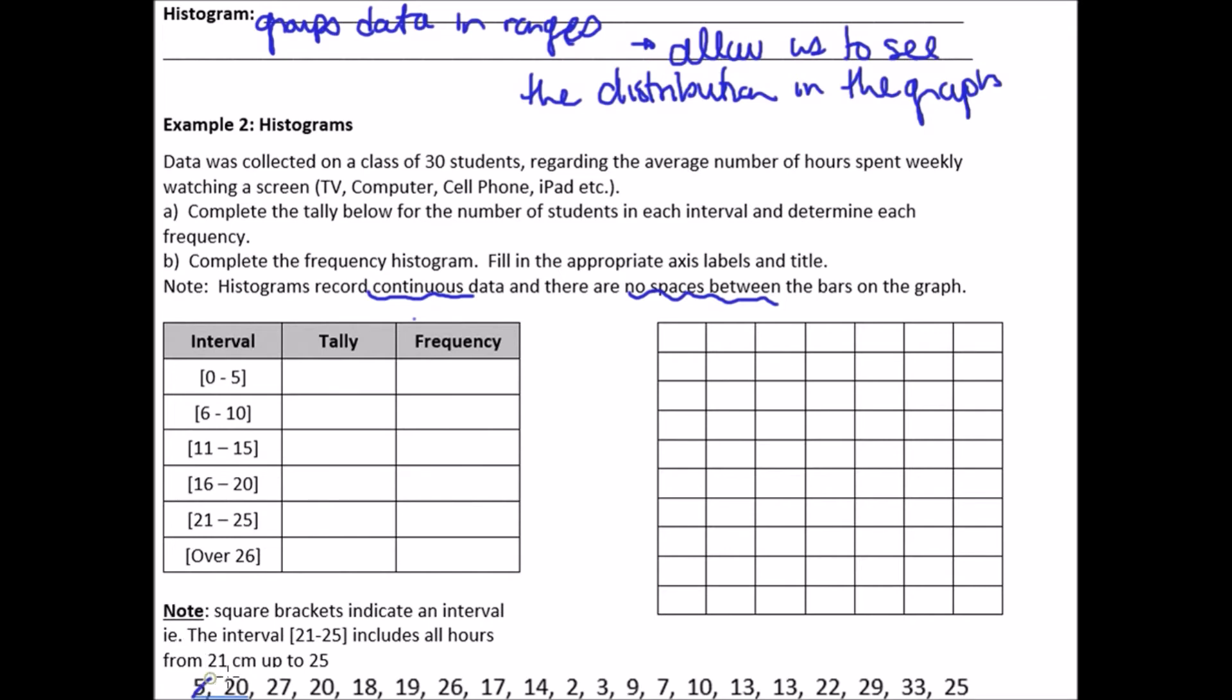Okay. Complete the frequency histogram, fill in the appropriate axis labels and title. Note histograms record continuous data and there are no spaces between the bars. Okay. So that's the difference between a histogram and a bar graph. So there are no spaces between the bars and it records continuous data on the bottom there. So let's go through the data together. So, let's go, this is how I do it. I go five, 20, 27. So five goes here, 20 and 27, 20, 18, 19, 20, 18, 19, 20, 18, 19, 26, 17, 26, 17.